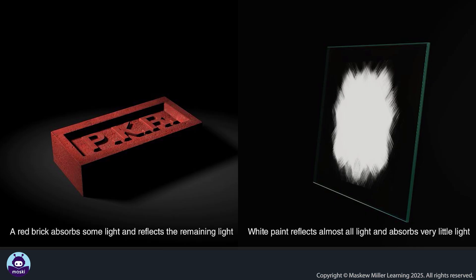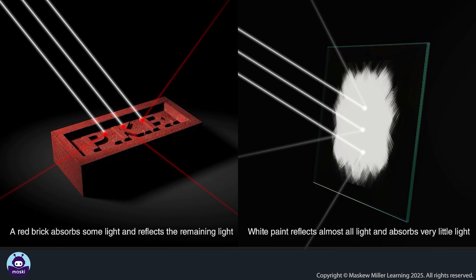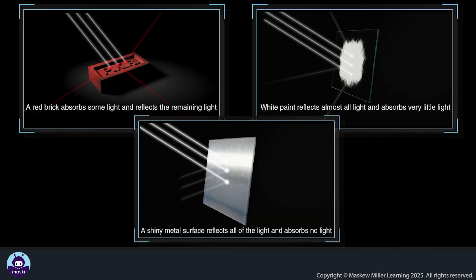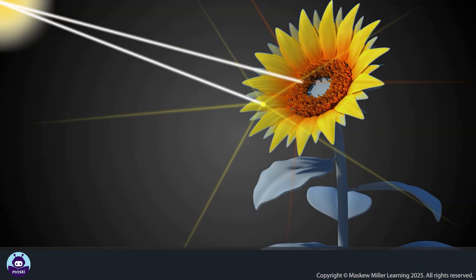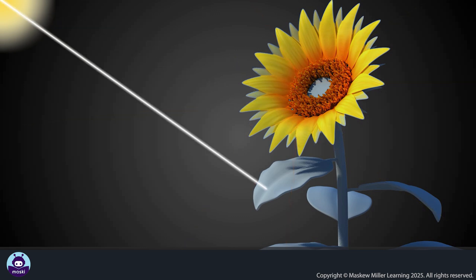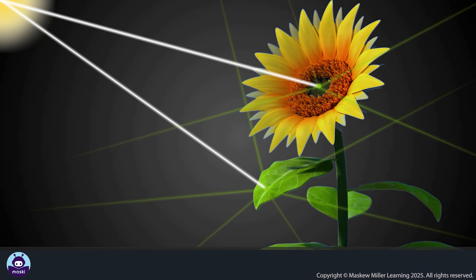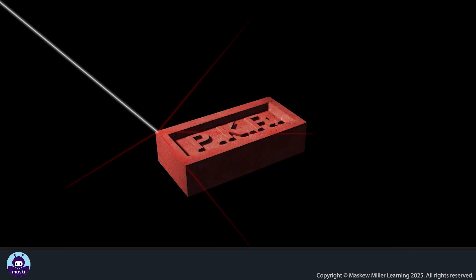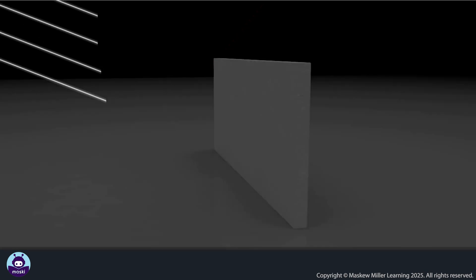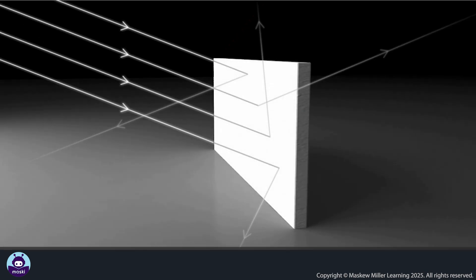Opaque materials can absorb or reflect light, and different materials do this differently. A material has color because it absorbs some frequencies of light in the visible spectrum and reflects others. A red brick absorbs all frequencies of the visible spectrum except the one we see as red — it reflects only red light. When this reaches our eyes, we see the brick as red.